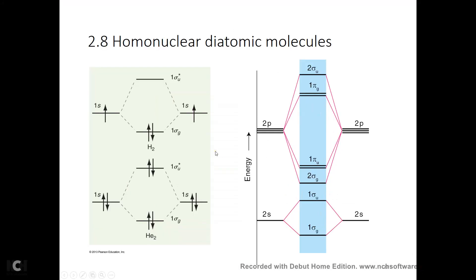Section 2.8, homonuclear diatomic molecules. Let's look at hydrogen again — the 1s orbital and this 1s orbital. We form two MOs: one is the sigma orbital, one is the sigma star orbital. This G stands for symmetrical, U is anti-symmetrical. We put these two electrons in the lower energy orbital, and this energy decrease plus this energy decrease is the bond energy of hydrogen-2.